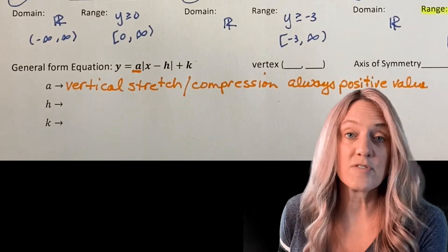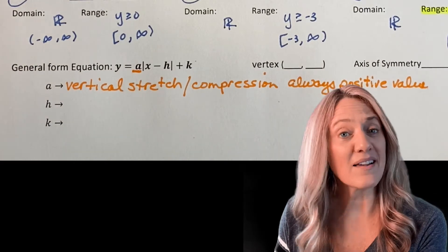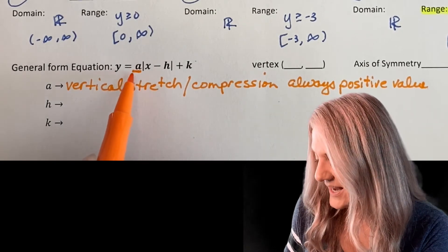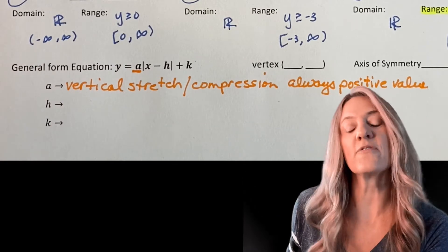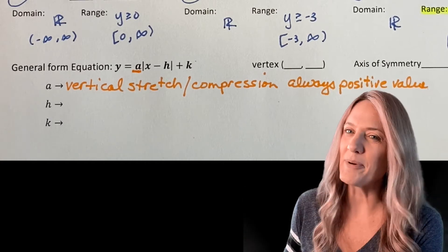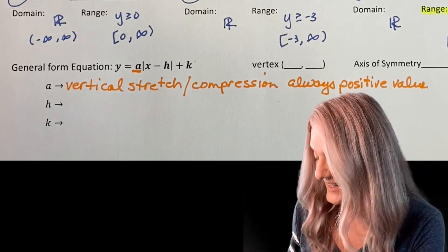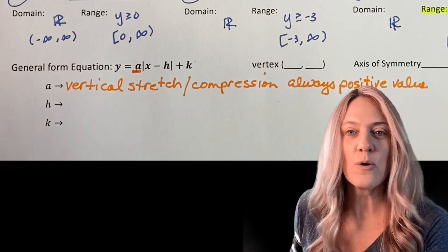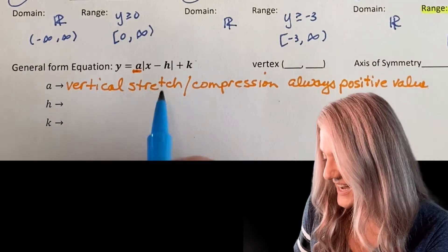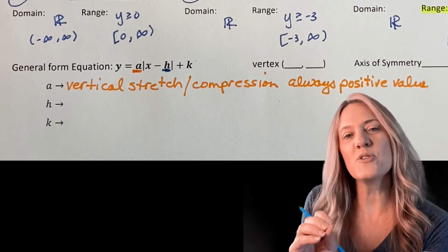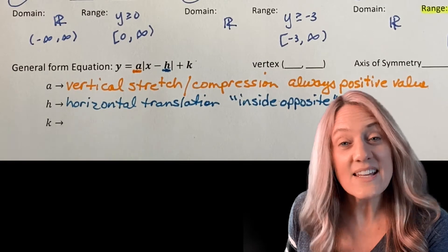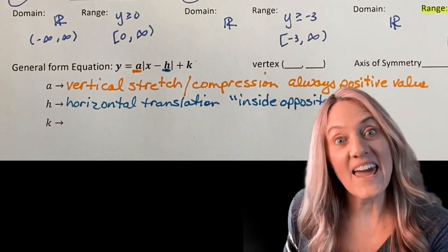A gives us our vertical stretch or compression. It's always a positive value. The other thing to know is that we are multiplying by that a value, so we always refer to it as a factor. Next, let's take a look at h. H is inside with the x — and what did we find out about that? Inside was opposite. H has a movement of left or right, so that was our horizontal translation. Inside means opposite sign.